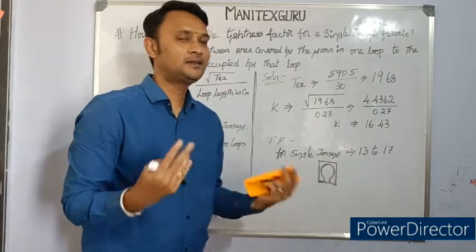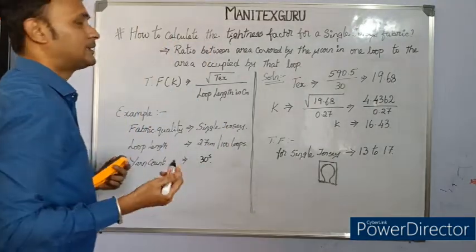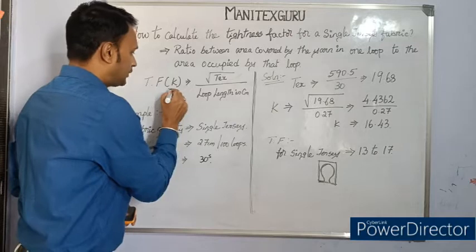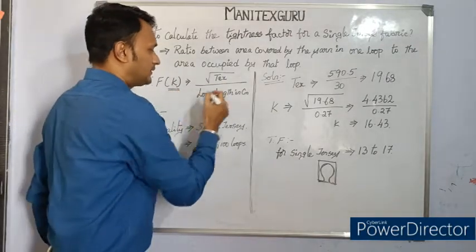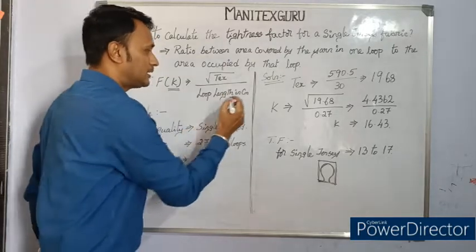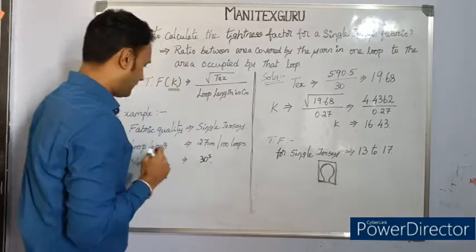The tightness factor is commonly referred to as K. The formula used to find out the tightness factor is square root of Tex divided by loop length in centimeter for a single loop.